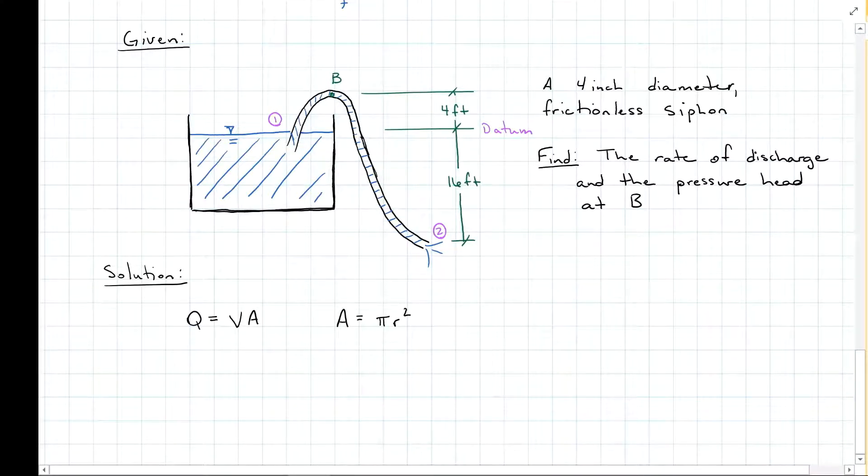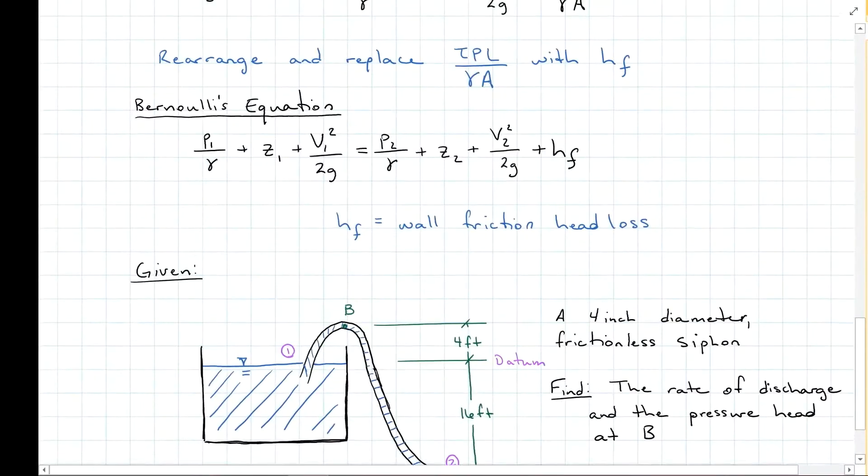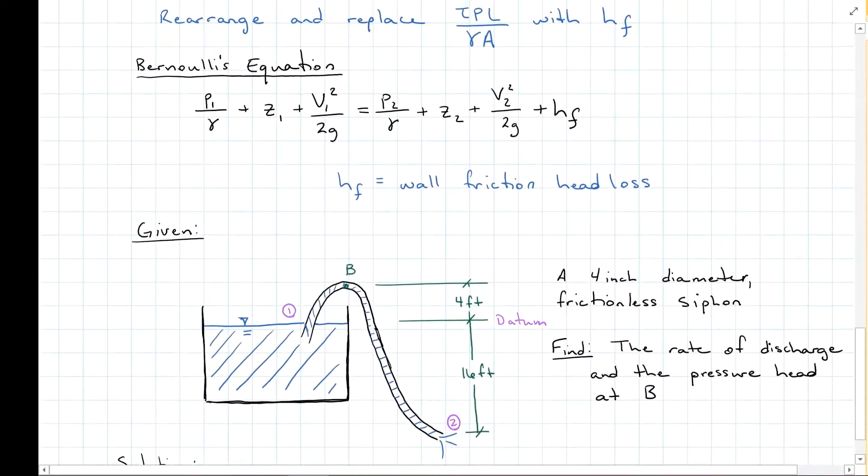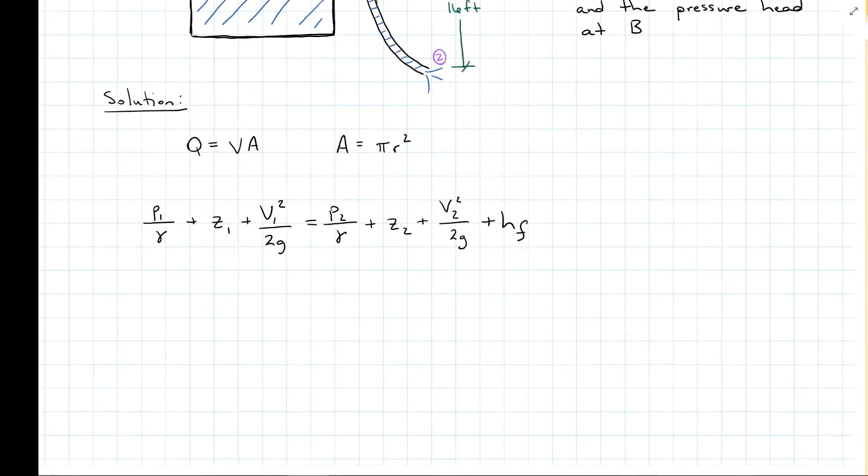So if I've got the tank intake at 1, the outgo at 2, I'm going to use Bernoulli's equation, and let's start making some things go away. So the tank, so this would be the tank side, and this is going to be the end of the siphon.